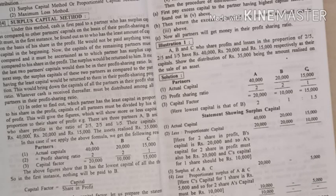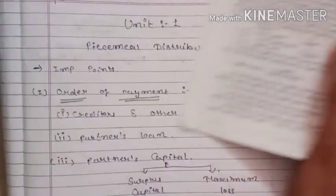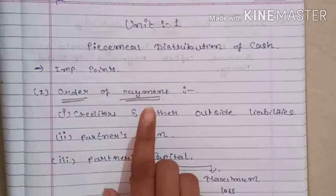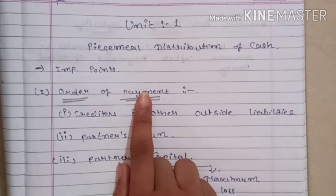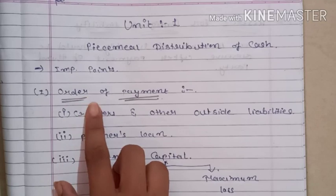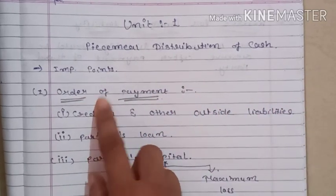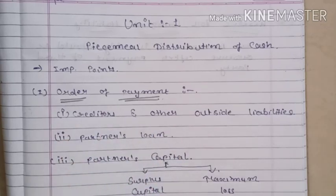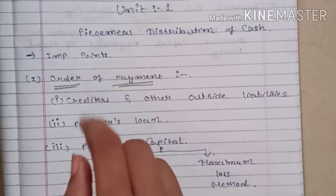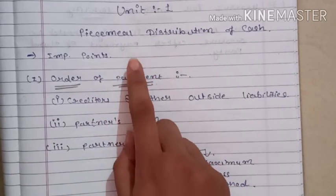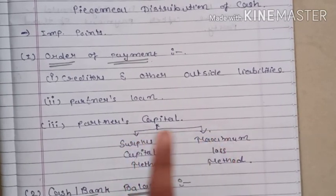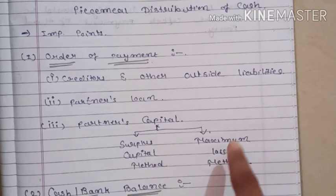Before starting the chapter and solving practical sums, there are some important points to note down. Point number 1: order of payment. Whenever assets are realized, payment is made in this order — first: creditors and other outside liabilities; second: partners' loan; third: partners' capital at the last. After all outside and inside liabilities are cleared, partners' capital is paid. There are two methods covered in this chapter: first is the surplus capital method, and second is the maximum loss method.